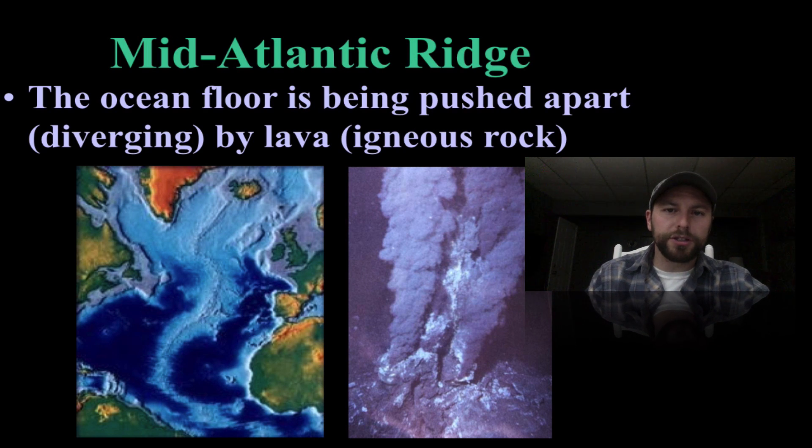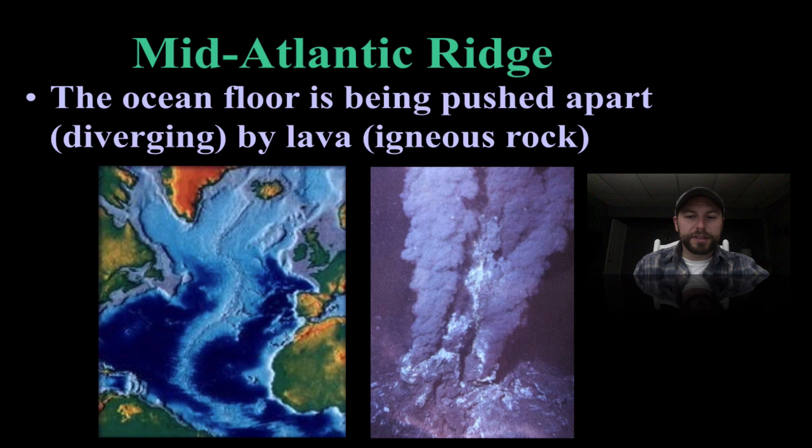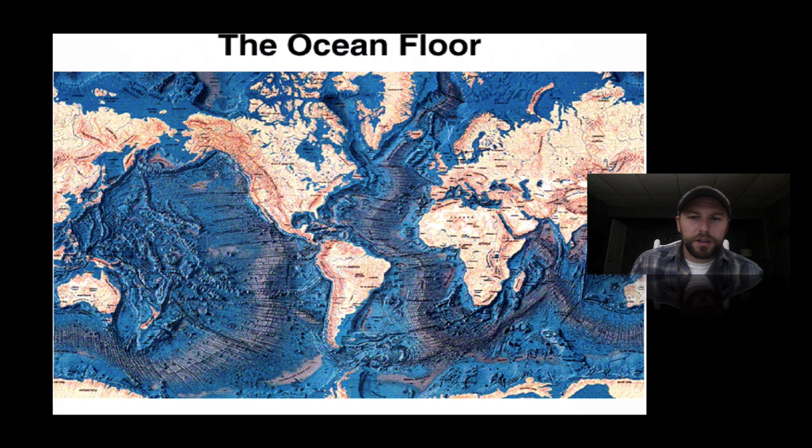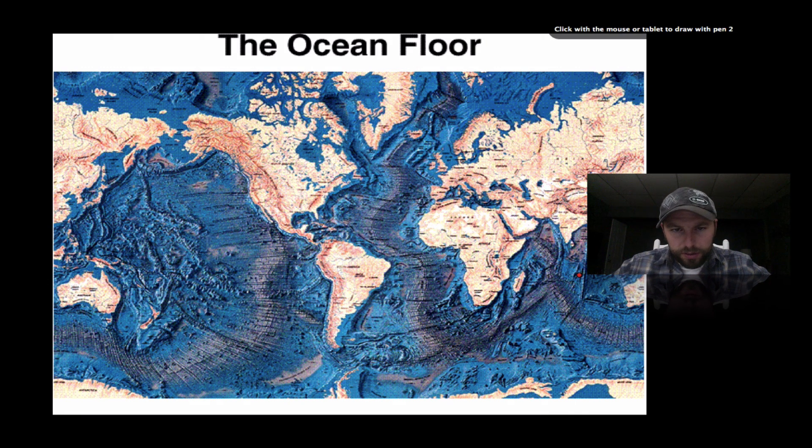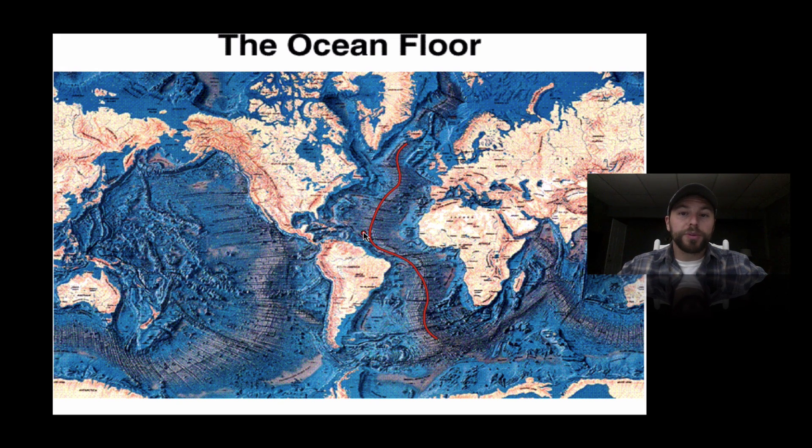We also have the Mid-Atlantic Ridge off the east coast of the United States in the Atlantic Ocean, pretty much in the middle right between Europe and the United States. Here we have ocean floor that has been being pushed apart or diverging because of the convection cells within the asthenosphere, bringing magma up to the surface. If we look at our ocean floor, see this is our Mid-Atlantic Ridge turning down right between the continents, moving the North American plate away from our Eurasian-African plate.